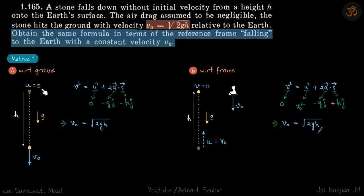Here u is 0, a is -g ĵ vector, and s the displacement is downwards so that is h into -ĵ vector. We do this dot product and we get that v₀ when it strikes the ground is √2gh.